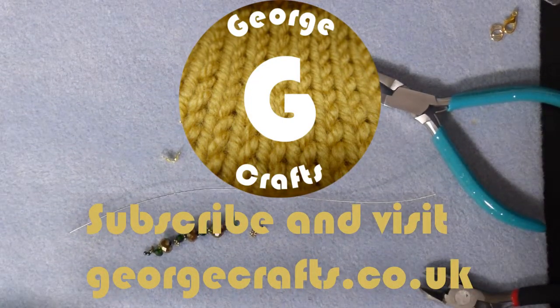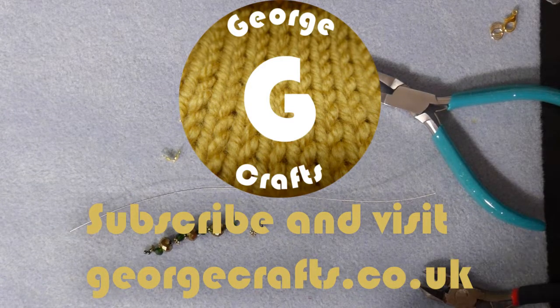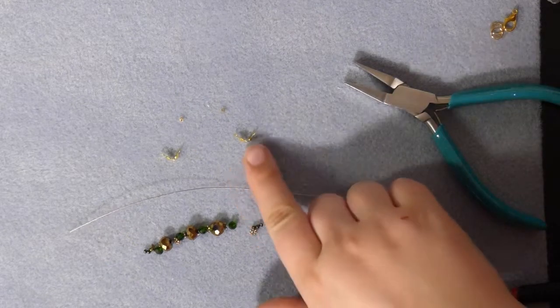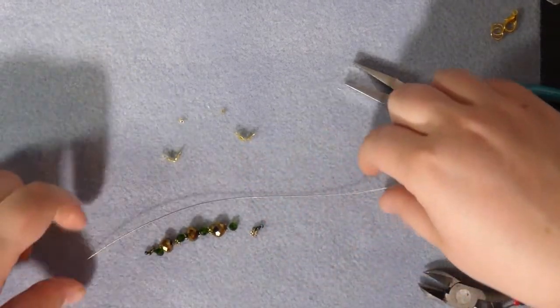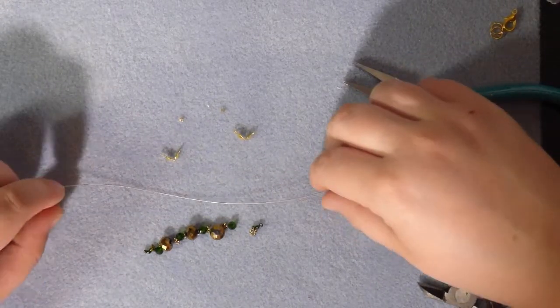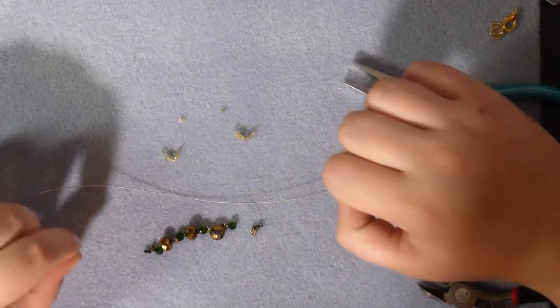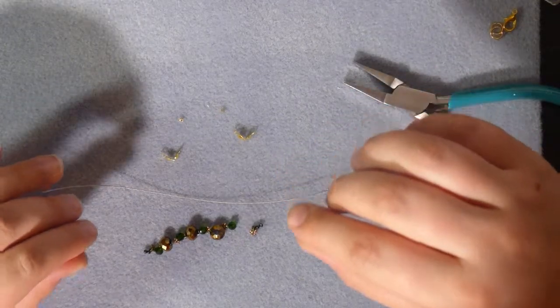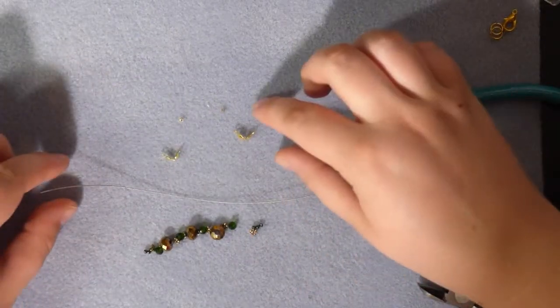Hi everyone, welcome to George Crafts. Today we're going to do another jewelry tutorial. I'm going to show you how to use these - they're called calottes, and they are a great little piece of kit for jewelry making. They make your work look really professional and keep your work nice and secure.